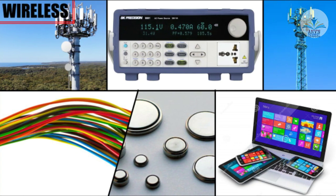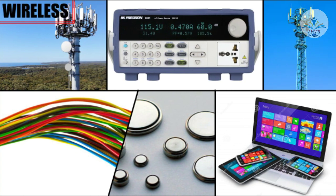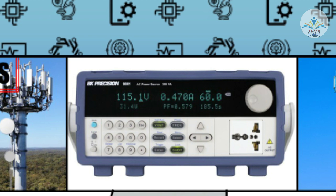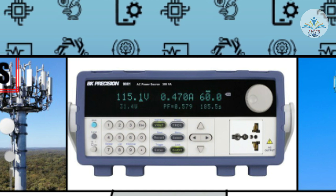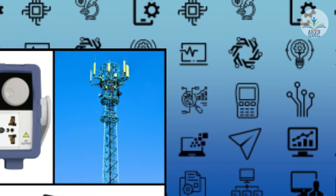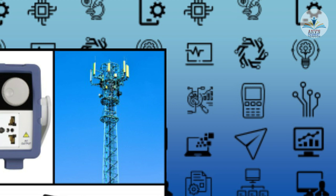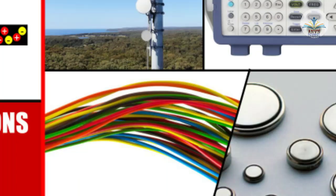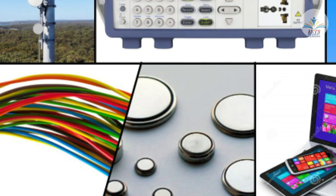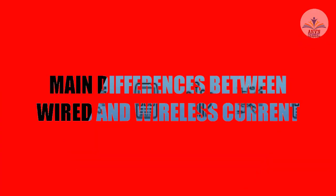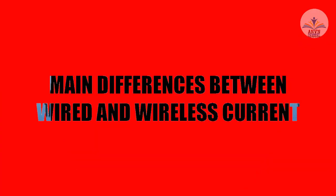In a wireless power transmission system, a transmitter device driven by electric power from a power source generates a time-varying electromagnetic field, which transmits power across space to a receiver device. The receiver extracts power from the field and supplies it to an electrical load. The technology of wireless power transmission can eliminate the use of wires and batteries, thus increasing the mobility, convenience, and safety of an electronic device for all users.